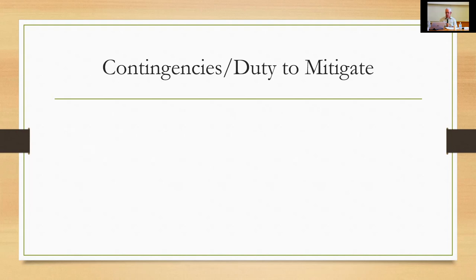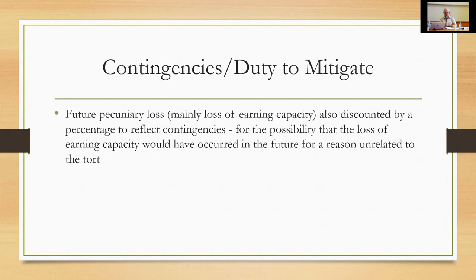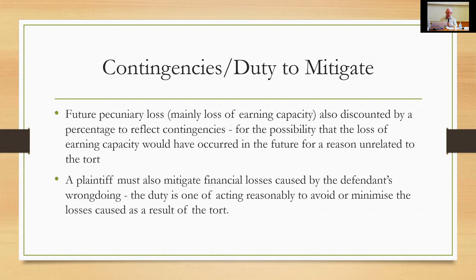Two other general principles apply. First, for future pecuniary loss — mainly loss of earning capacity — the award is discounted by a percentage to reflect contingencies: the possibility that the loss would have occurred in the future for reasons unrelated to the tort. Second, a plaintiff must mitigate financial losses caused by the defendant's wrongdoing. The duty is to act reasonably to avoid or minimise losses; you cannot claim for loss of earning capacity if you haven't tried to look for work, when you may in fact have earning capacity you haven't utilised.